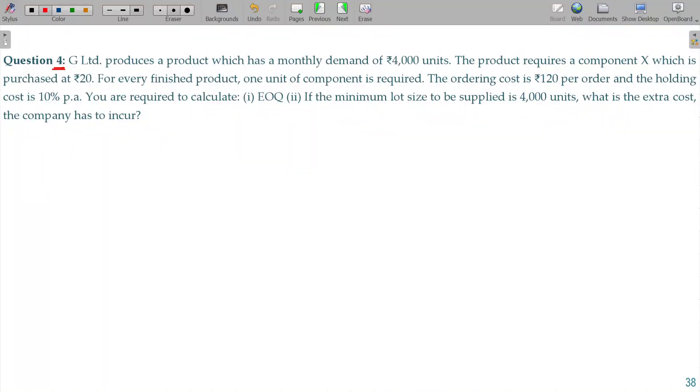Question number 4: G Limited produces a product which has a monthly demand of 4000 units. Either finished goods, produces a product rather than finished goods, we never bother about this.